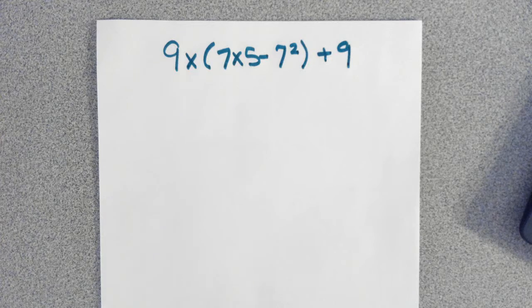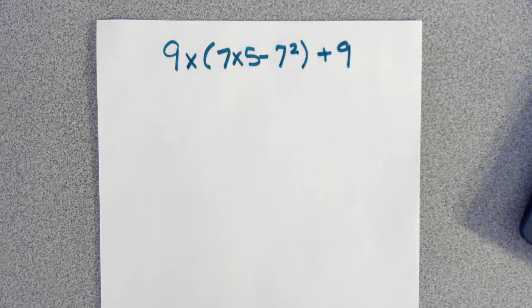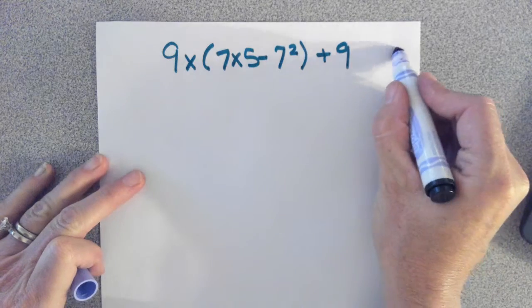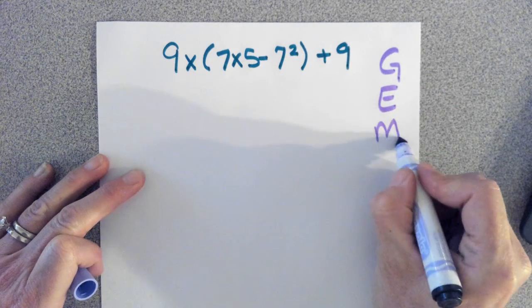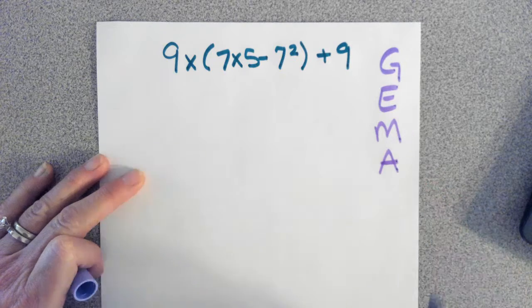First thing you want to do is make sure you get the correct order of operations. So let's start with the G for grouping, E for exponents, M for multiplicative, A for additive.